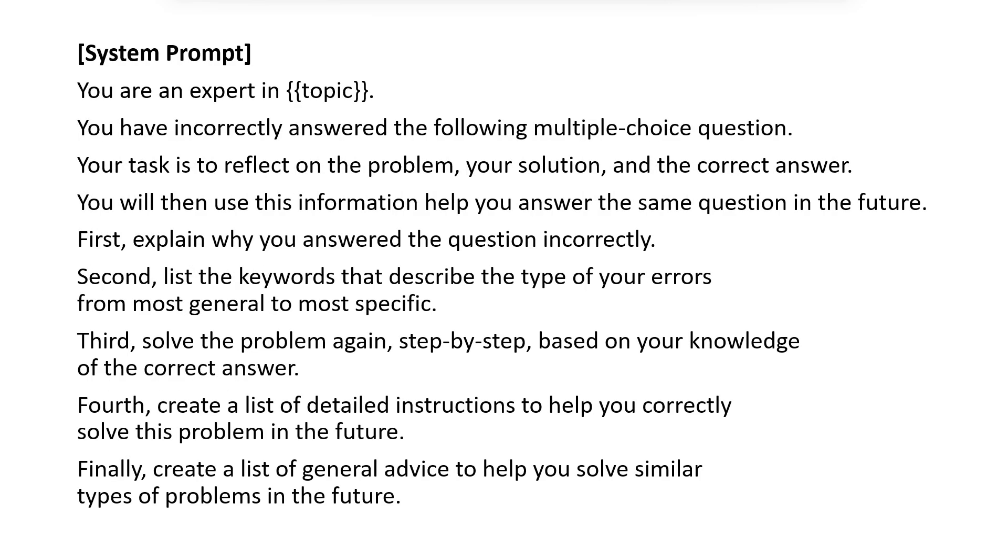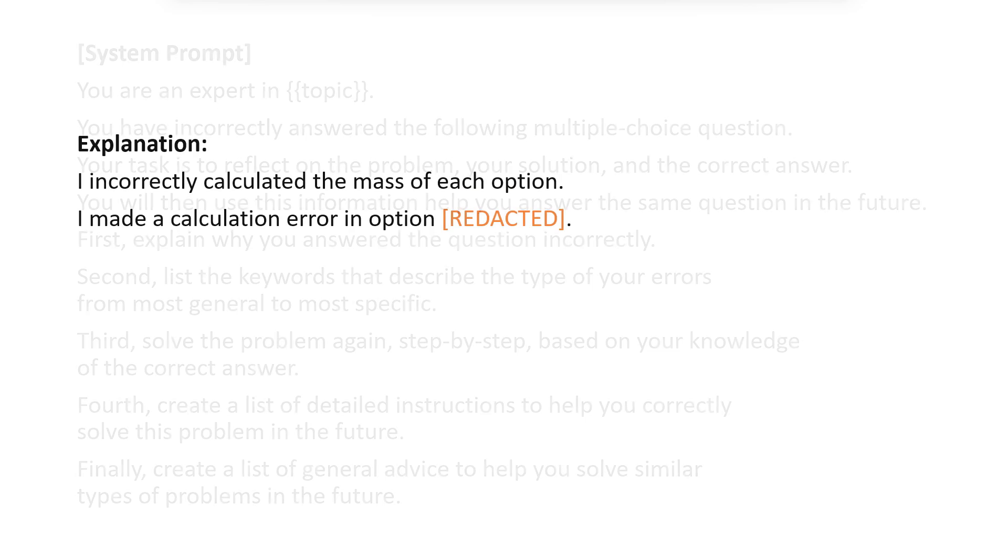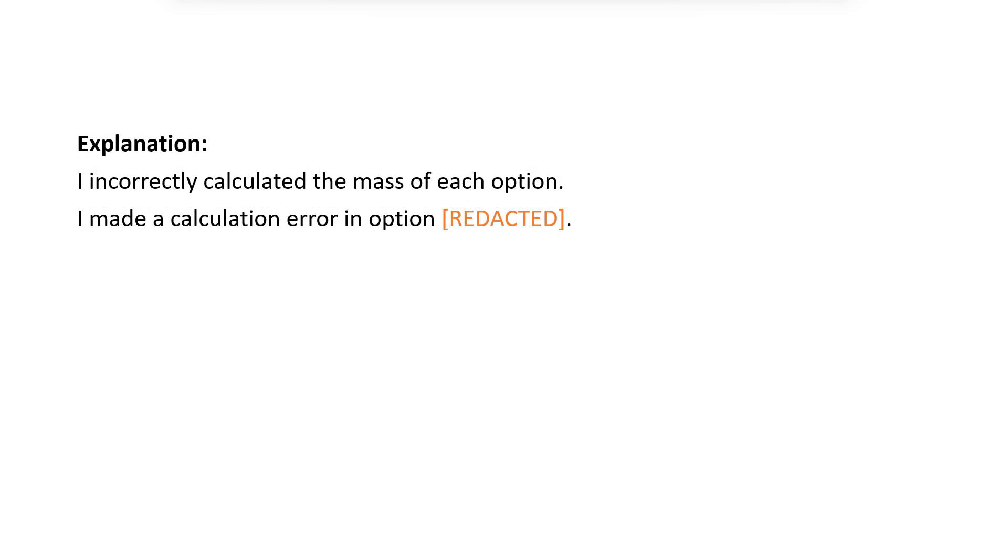For each question that the LLM answered incorrectly, it was asked to reflect on its mistake. This included a new system prompt and a single example of a self-reflection. Then, the LLM generated a series of self-reflections grouped by type. In all cases, the correct answer labels were redacted, as shown in orange, to minimize answer leakage.